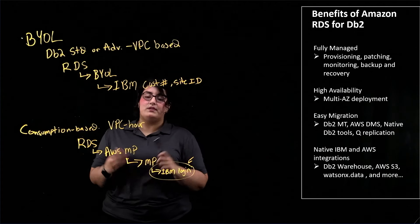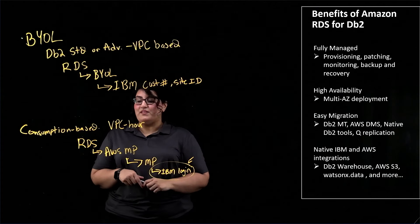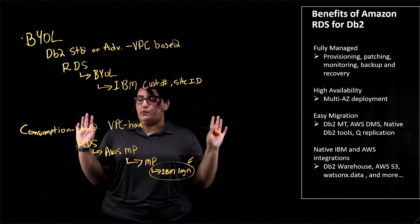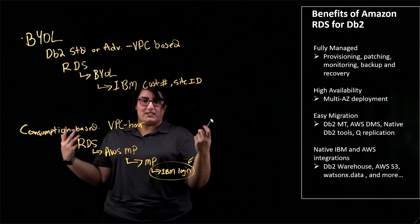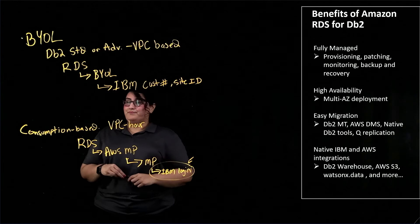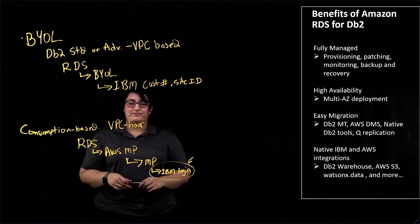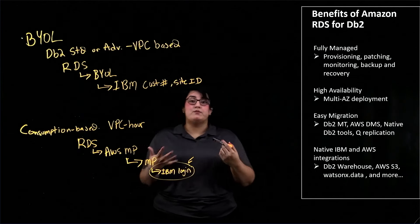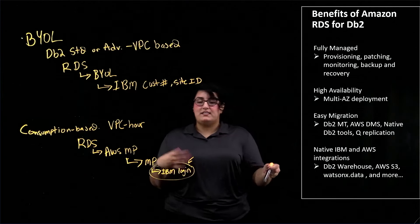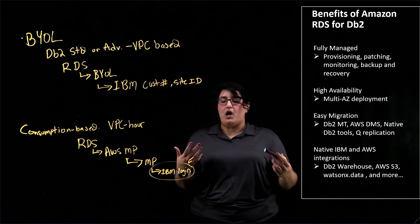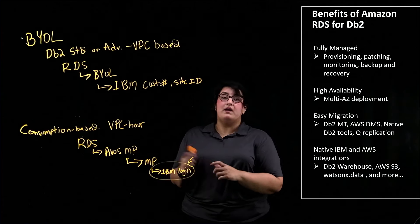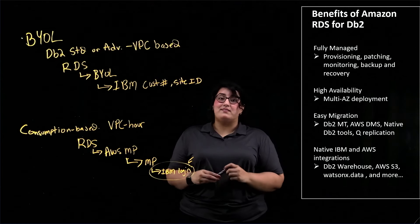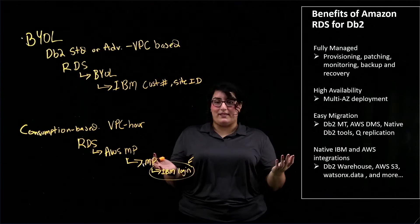For the consumption-based license, we now have private offers available. Go ahead and reach out to us and we'll discuss negotiated or discounted prices. For both of these options, we have the AWS Pricing Calculator available to see how much it would cost you on a monthly basis to run RDS for DB2. And for the BYOL version, we have AWS License Manager available to help you manage your licenses.